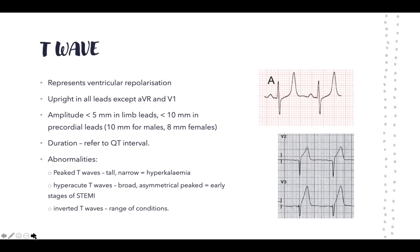Now we'll talk about the T wave. The QRS represents ventricular depolarization, while the T wave indicates ventricular repolarization. It is upright in all leads except AVR and V1, where it is expected to be negative because those leads look in the opposite direction to the main electrical flow.